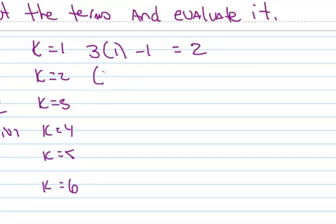When k equals 2, we simply put 2 in for k. So that gives me 5. For k equals 3, we put 3 in for k. And that gives me 8.